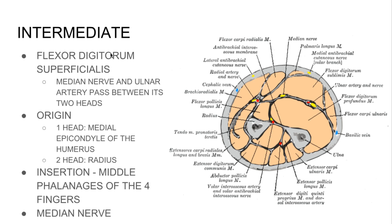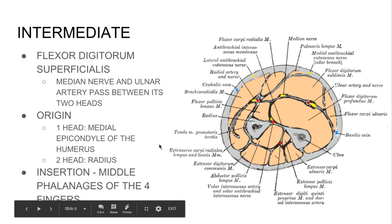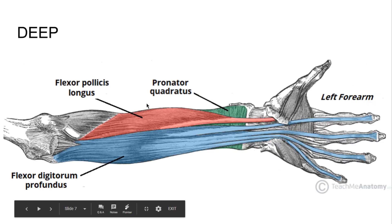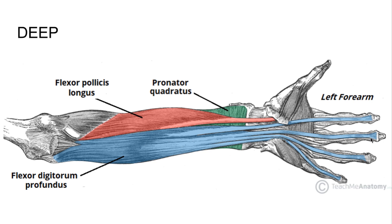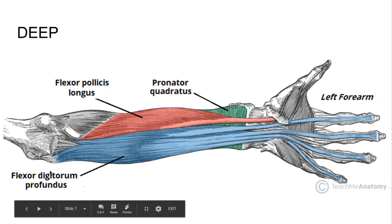Going a little deeper, we have the intermediate layer, which has flexor digitorum superficialis. This is innervated by the median nerve and inserts on the middle phalanges of the four fingers. What goes all the way to the distal phalanges — the DIP joint — is the flexor digitorum profundus. Half of this is innervated by the ulnar nerve and half by the median nerve.